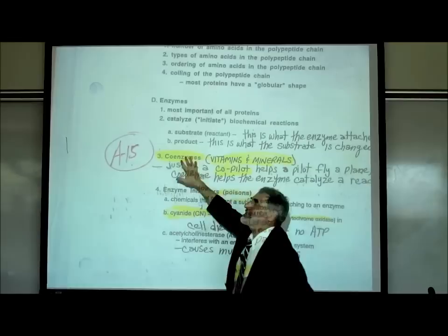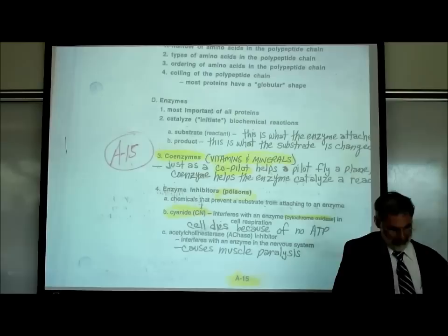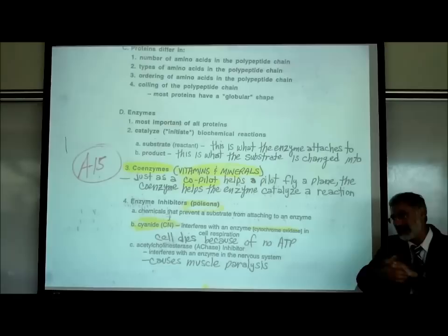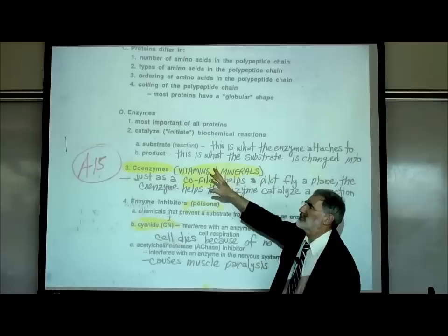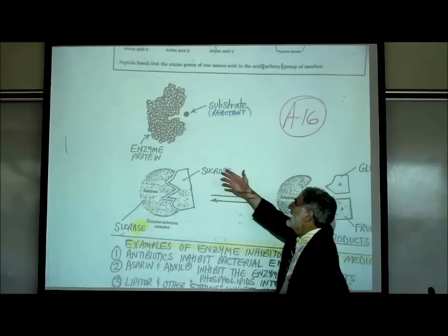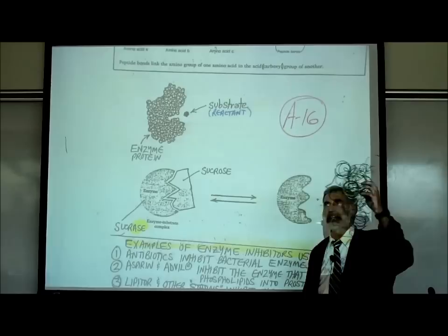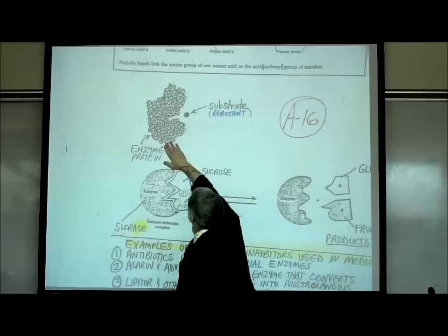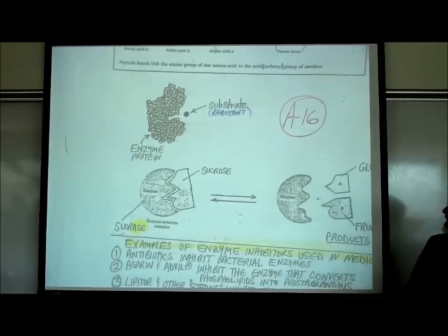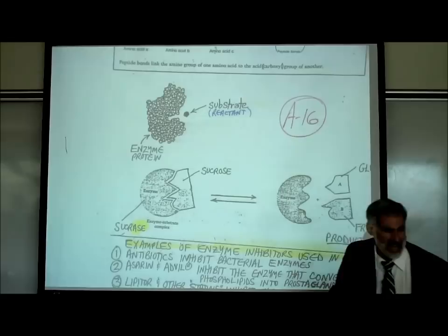How do enzymes work? Enzymes attach to what is called a substrate or reactant. After they attach to the substrate, they cause a change in it so that what is formed is known as the product. Looking at page A16, it shows an enzyme protein — all proteins look like a slinky, just coiled differently — attaching to a substrate, also known as a reactant.